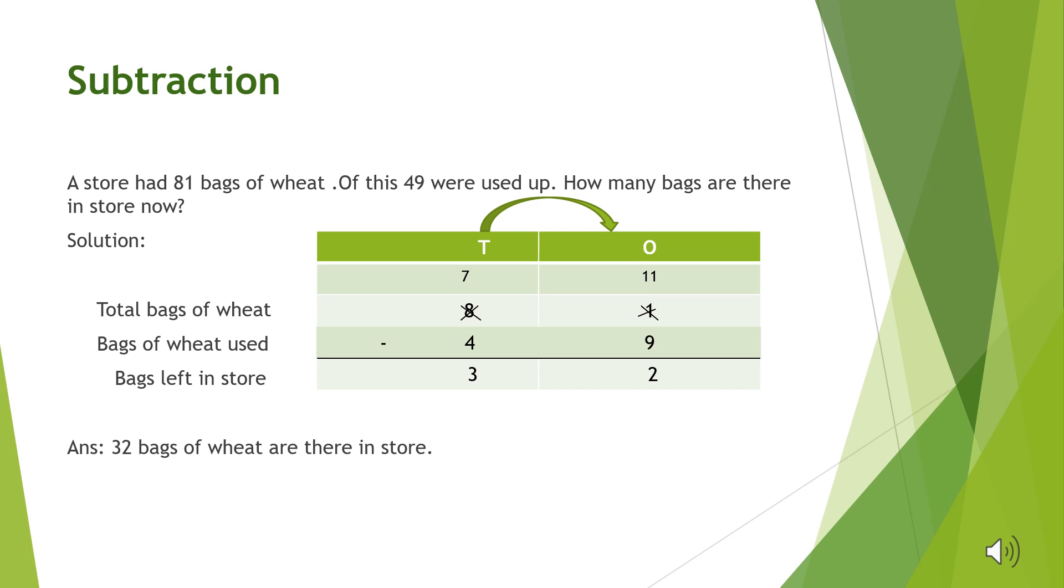Now in the tens column, 8 has given its 1 ten to the ones column. We are left with 7 tens. So 7 minus 4 is equal to 3 tens. The final answer will be bags left in the store are 32.